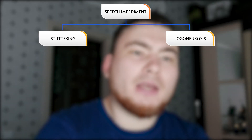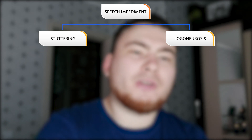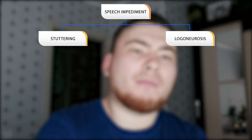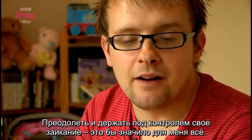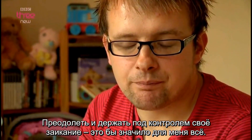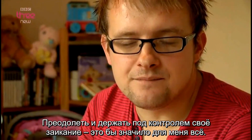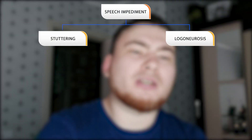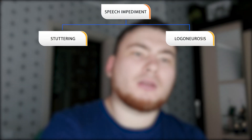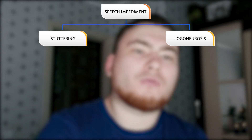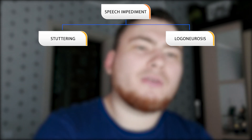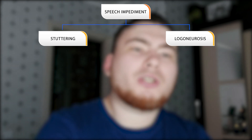Logoneurosis cases are more difficult. A person with logoneurosis tries to say a specific phrase but instead gets seizures and spasms on their face. In addition, if a person with logoneurosis thinks ahead about a specific word that they won't be able to pronounce, that particular word will cause a block.